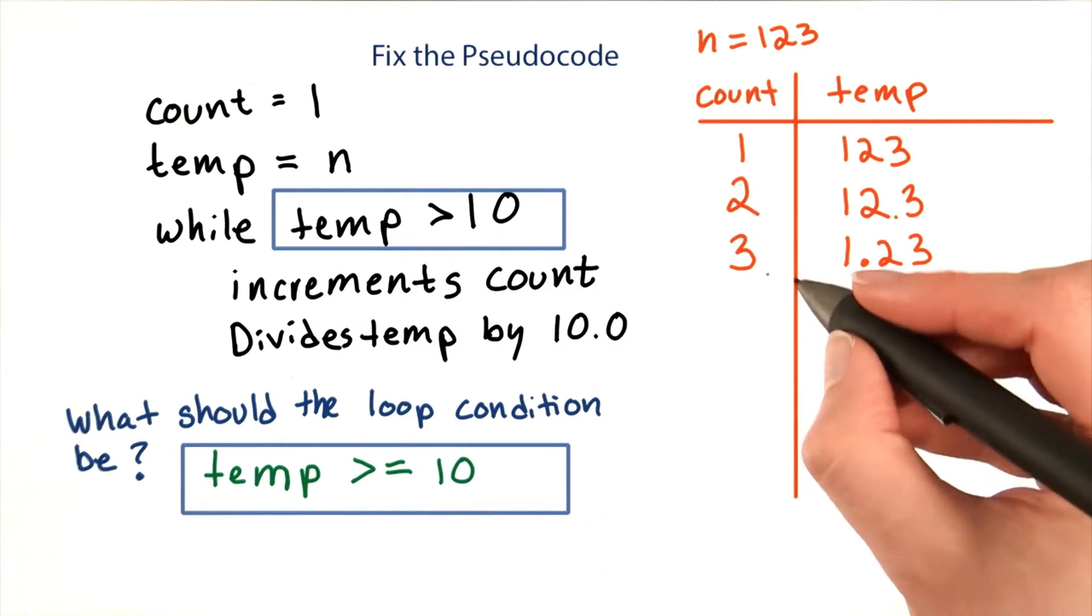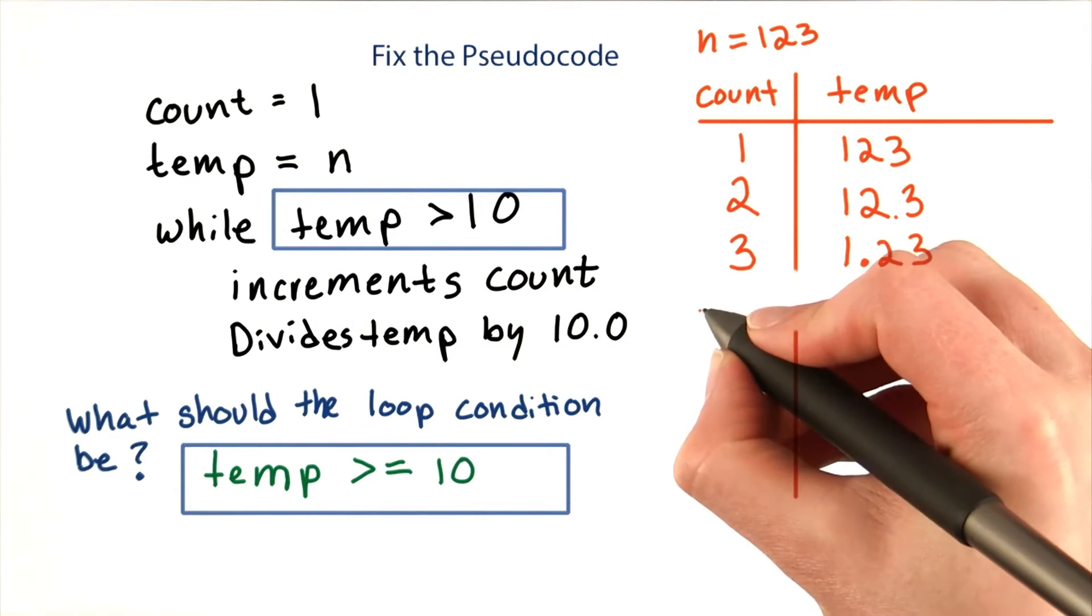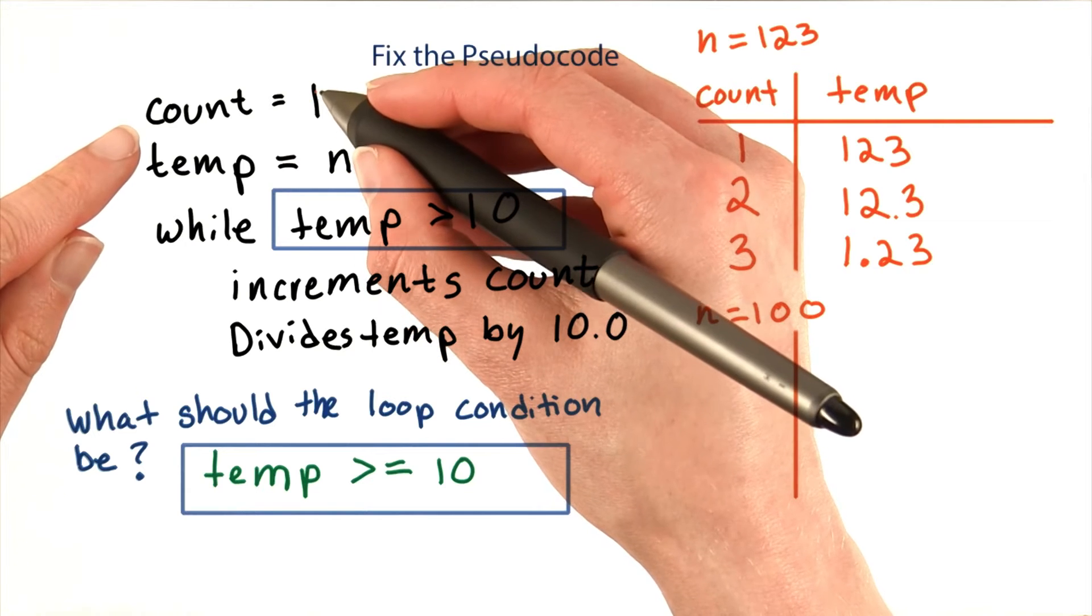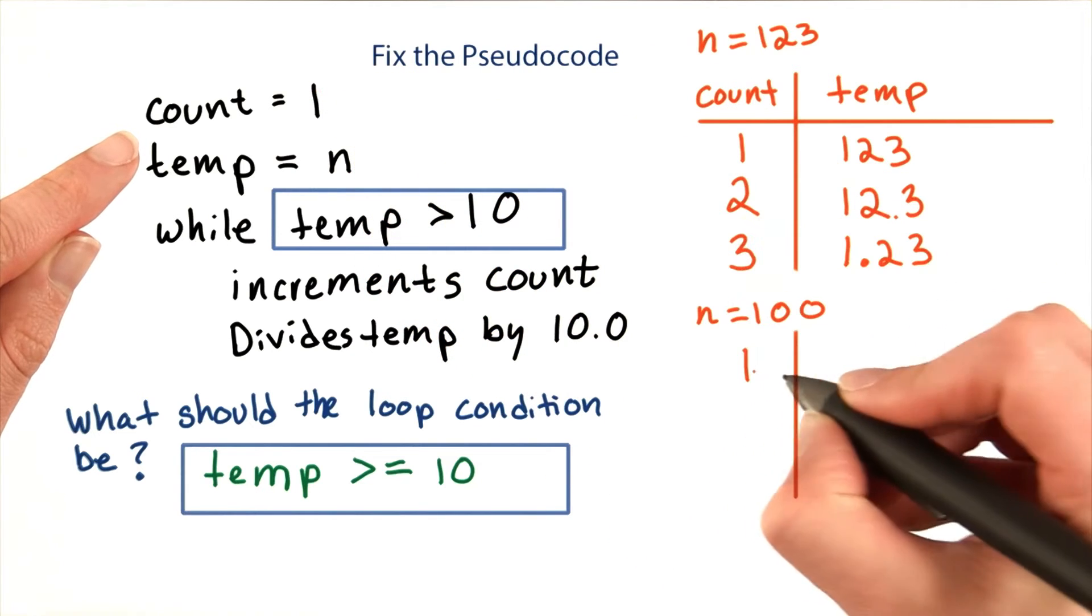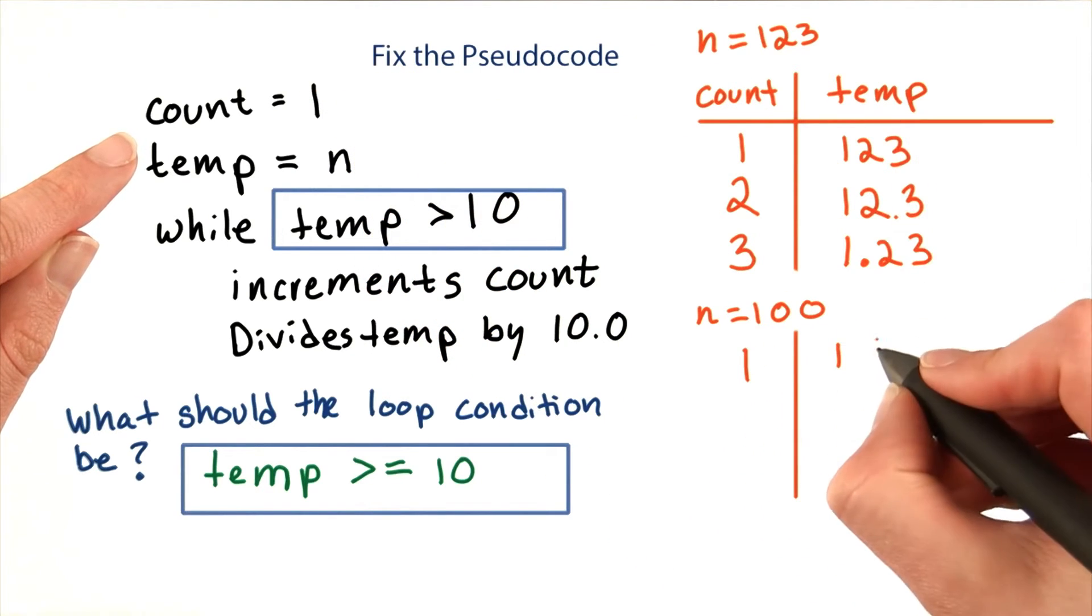But what would happen if n was 100? Count would start as 1, the way it did before, and temp would start as 100.